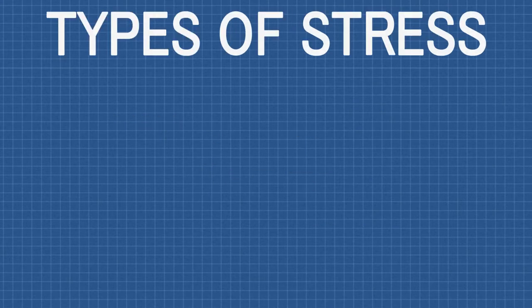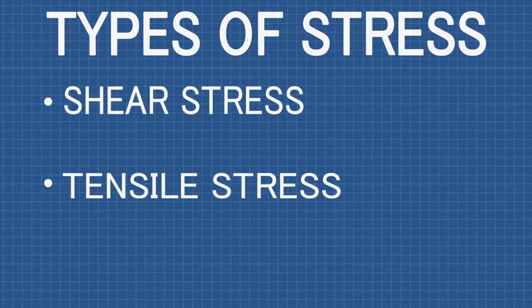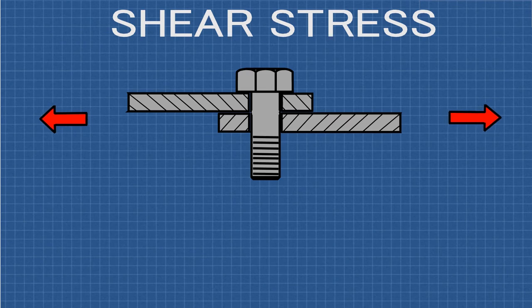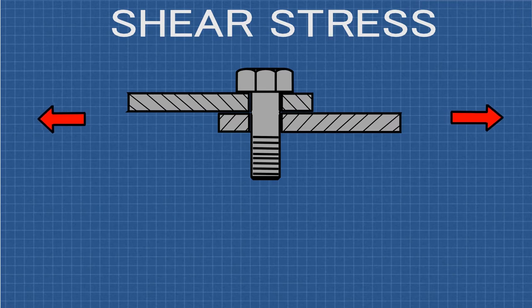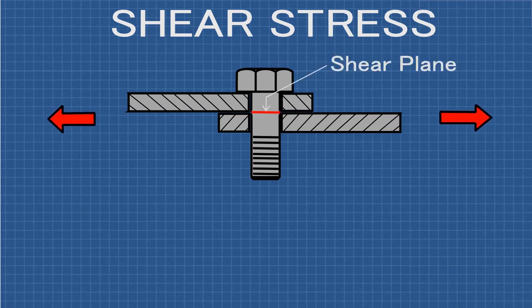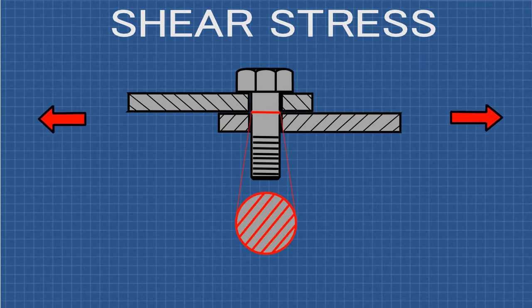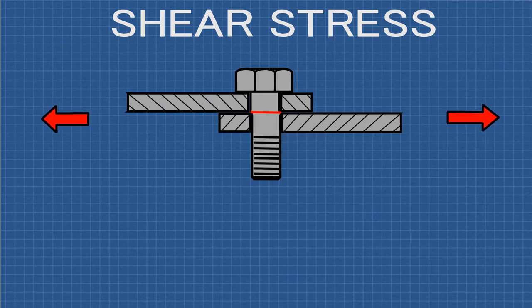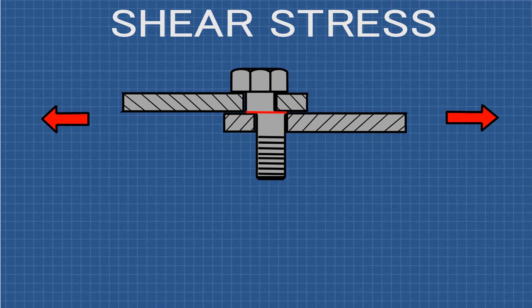Fastened joints like these undergo three types of stress: shear stress, tensile stress, and compressive stress. First let's understand shear stress. Here's a cross-section view looking perpendicular to the bolt or fastener. As forces are applied to the base materials, there is a stress within the fastener as the base materials are forcing it in opposite directions along what's known as the shear plane. The cross-sectional area of this plane is A equals pi times the radius of the fastener squared. If the stress in this area is greater than the ultimate shear strength of the fastener, then the fastener will fail.